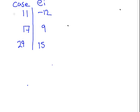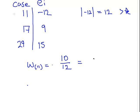In the first case, the absolute value is 12, which is definitely bigger than K. So the weighting for case 11 is 10 over 12, which is 5 over 6 or 0.833. Rather than having an equal weighting of 1, it only has a weighting of 0.833, so it's only 83% as important as the main body of residuals.